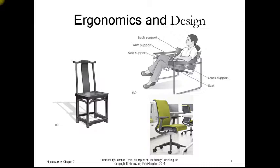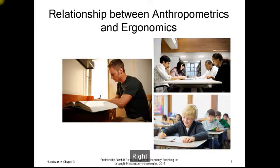On the lower right, we have a contemporary task chair or ergonomic chair that has many adjustable characteristics. There is a relationship, of course, between anthropometrics and ergonomics because depending on the size of the people using the furniture leads to the proper size furniture.